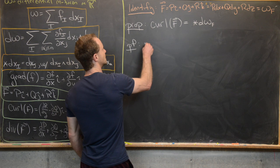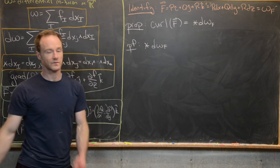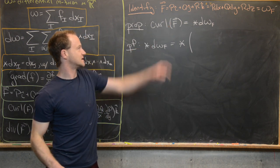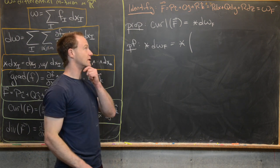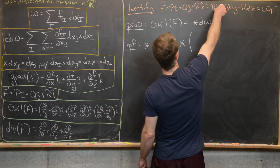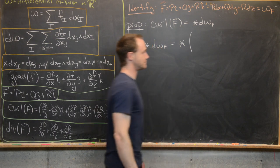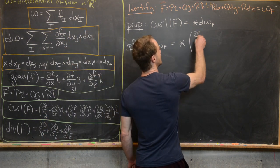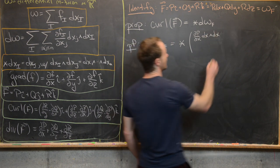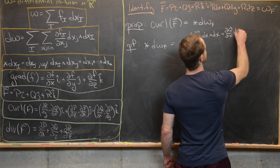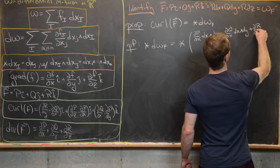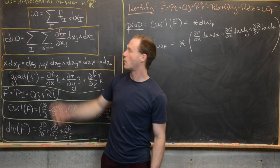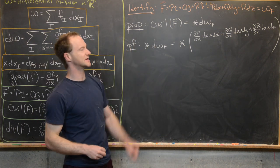Let's sketch the proof starting from the right-hand side: ★(d ω_F). We need to apply d to ω_F = P dx + Q dy + R dz, giving nine terms. Running through the partial derivatives on P dx first: ∂P/∂x dx ∧ dx, then ∂Q/∂x dx ∧ dy, then ∂R/∂x dx ∧ dz. That's running through the inner sum for the first single index.